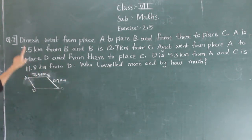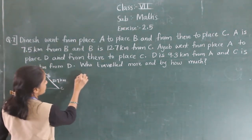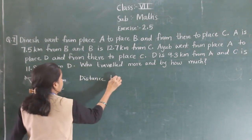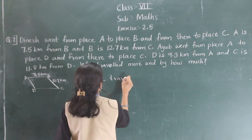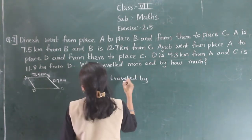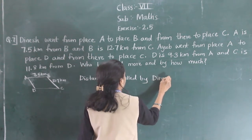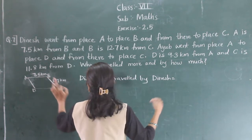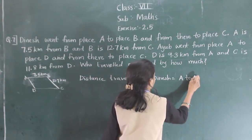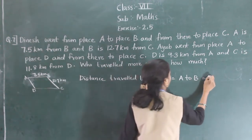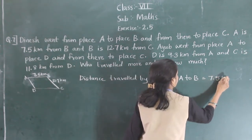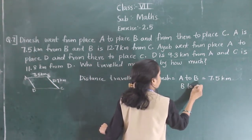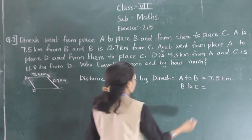So the distance traveled by Dinesh: A to B is 7.5 km, then B to C is 12.7 km.